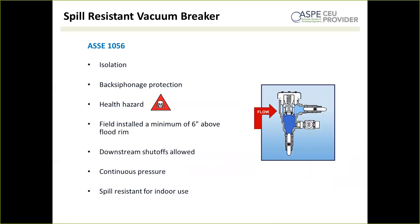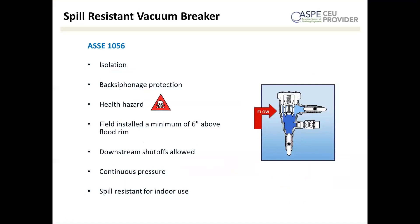A spill-resistant vacuum breaker, ASSE 1056, operates largely the same way as a pressure vacuum breaker, but has a spill-resistant feature that closes the vent prior to the check opening, allowing water to fill the device. This makes them appropriate for indoor use, where occasional discharge from a standard pressure vacuum breaker is more objectionable — you don't want water on the floor. You'll find them in applications such as indoor chemical dispensers, like soap dispensers or cleaning chemicals for mop sinks.